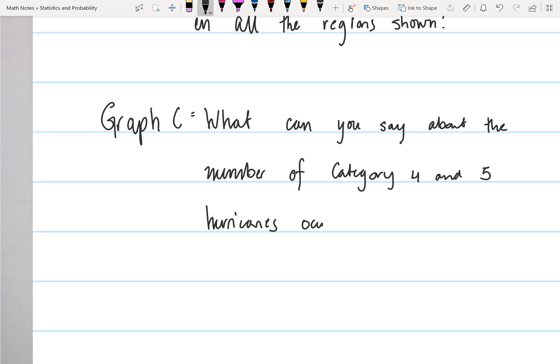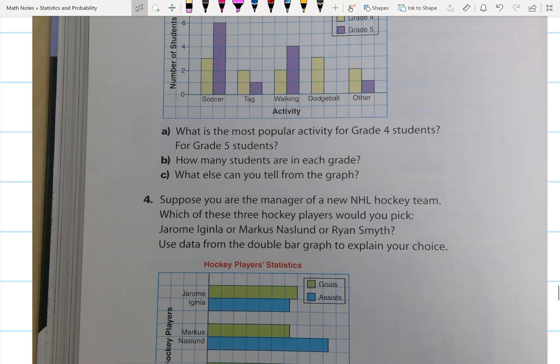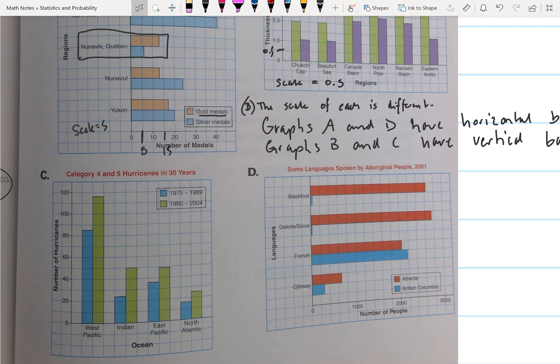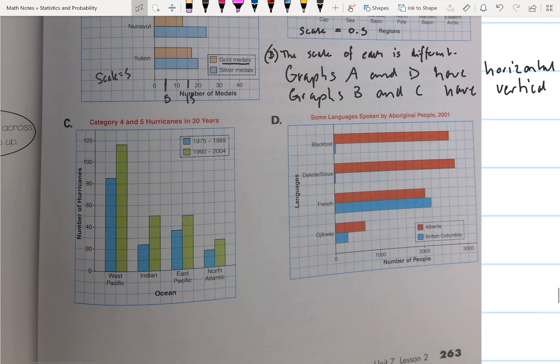Occurring in the two 15-year periods. So have they increased? Have they decreased? I can look at the graph and say in the last 15 years, the second 15-year period, the number of Category 4 and 5 hurricanes have increased in all regions.